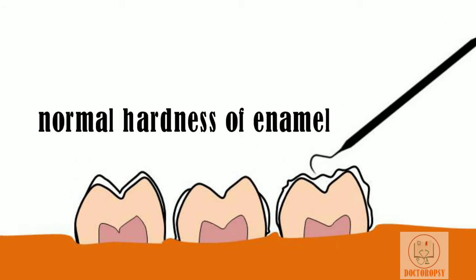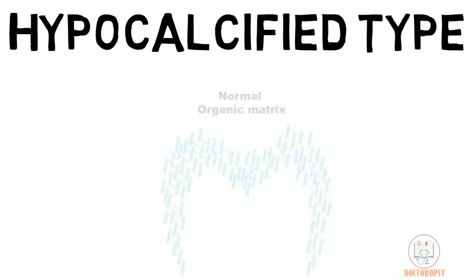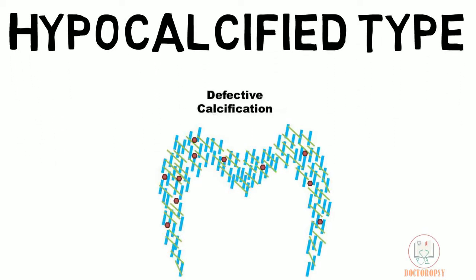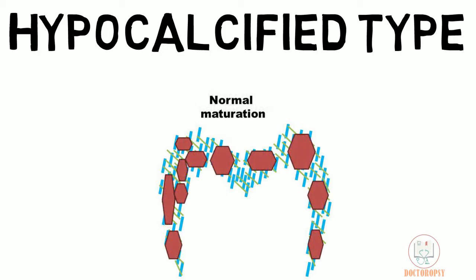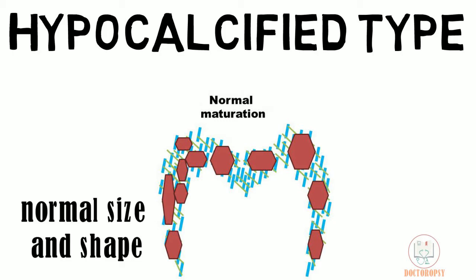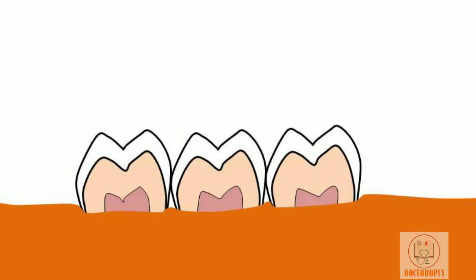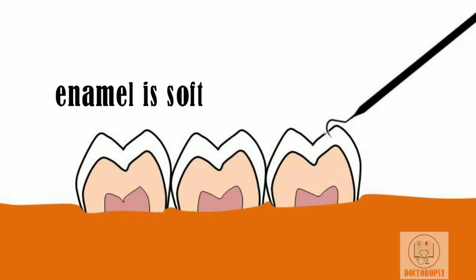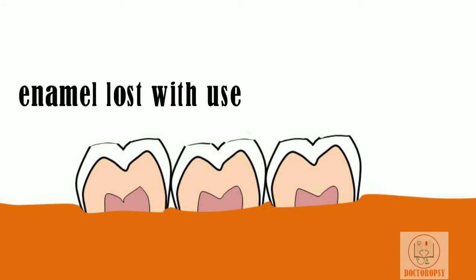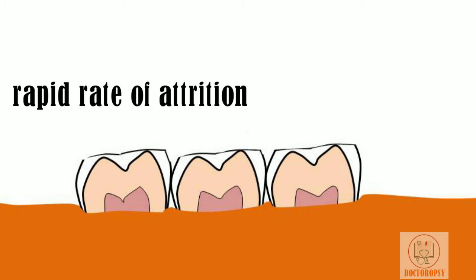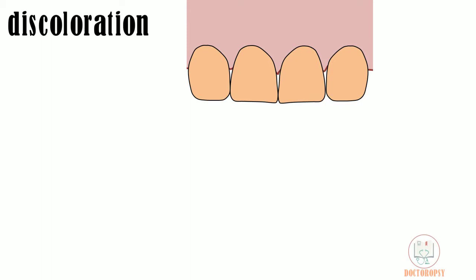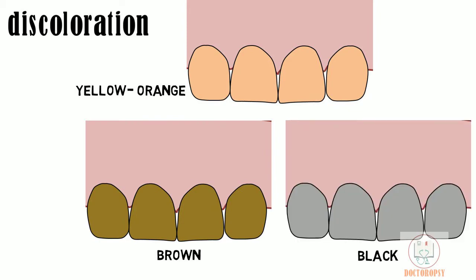In hypocalcified type, the enamel matrix formation is normal but the calcification is defective, though the maturation of the defective calcification continues normally. As the organic matrix is normal, the newly erupted crown is of normal size and shape. The defective calcification makes the enamel very soft and it is therefore easily lost with use. With years of function, the occlusal enamel undergoes attrition at a rapid rate, with only cervical enamel remaining. The newly erupted teeth are yellow to orange but get rapidly stained to brown and black.